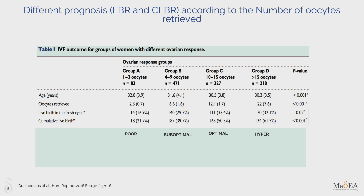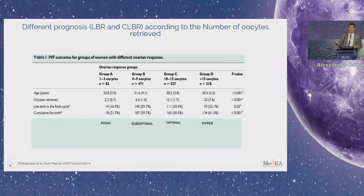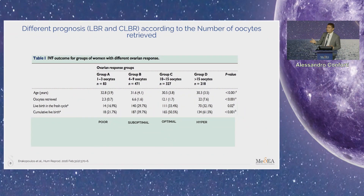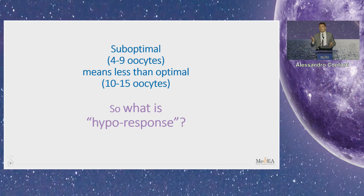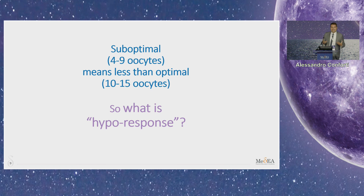That's why we identify a woman that has a suboptimal response as retrieving four to nine eggs, which is different from a normal response that retrieves 10 to 15 eggs. According to the number of oocytes, we can have two or three scenarios: a poor ovarian response retrieving less than three eggs, a suboptimal response of four to nine eggs, or a normal response of 10 to 50 or more eggs if we are talking about a frozen cycle.